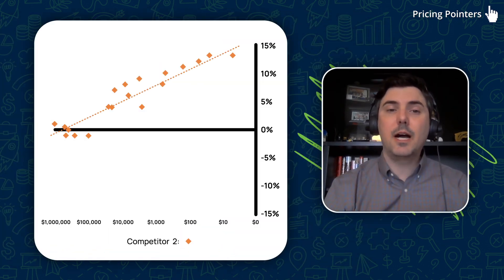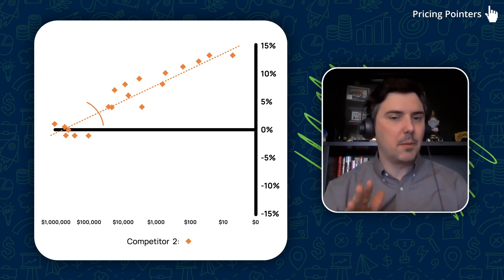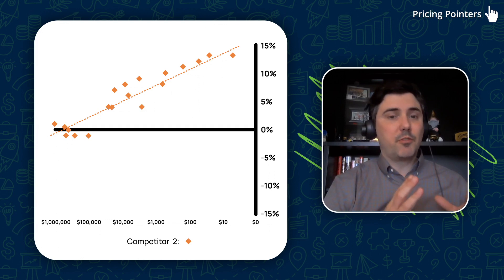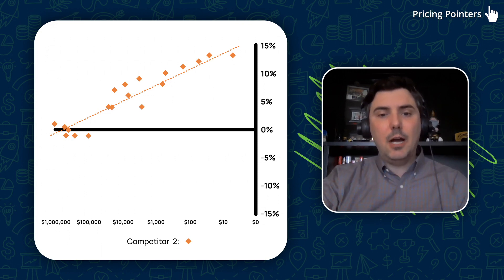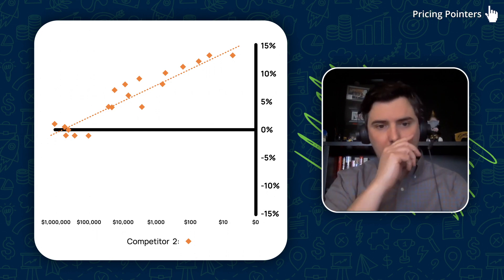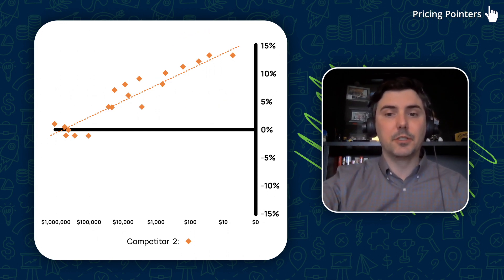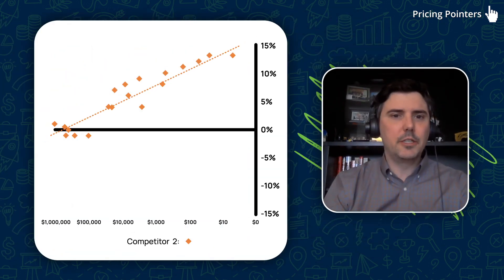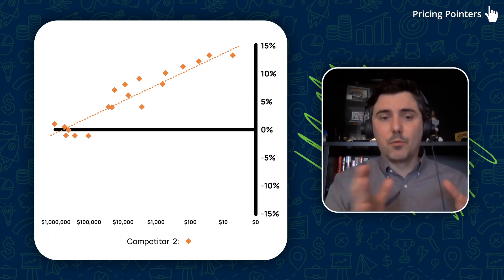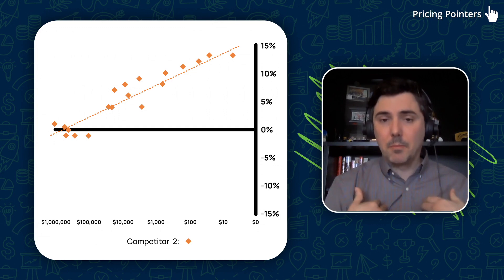Competitor two exhibits a different market position — generally within plus or minus about one percent of my price on important SKUs, because everybody has to price similarly on high-volume items. However, toward the tail end of the product portfolio we see differentiation. The orange diamonds charge a premium for those onesie-twosie products. I added a regression line which clearly shows: on important SKUs the competitor matches my price, but on less important SKUs they charge a premium.